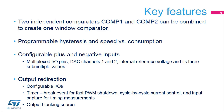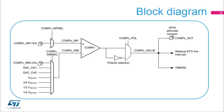The comparator output can be connected to IOs using the alternate function channels, or internally redirected to a variety of timer inputs, such as enabling the break event for fast PWM shutdown. The user can create cycle-by-cycle current control or input captures for timing measurements.